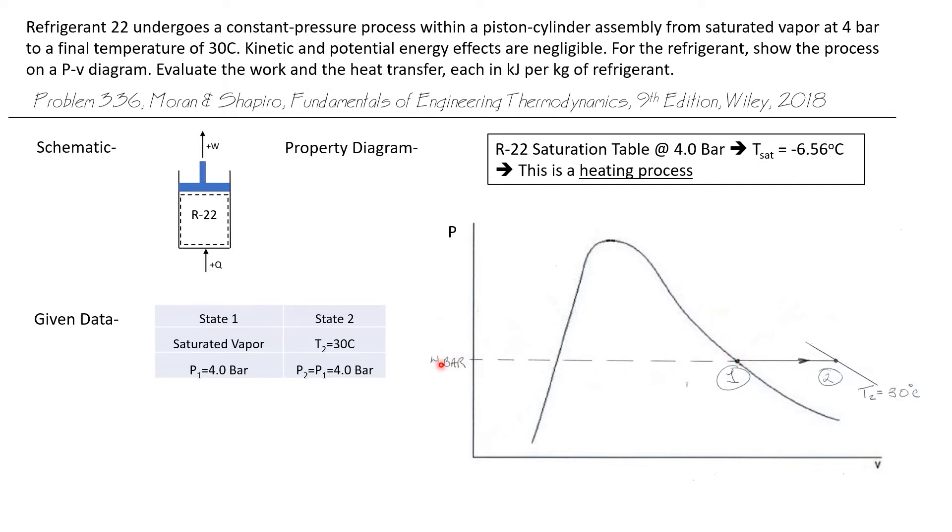On a PV diagram, the constant pressure line of 4 bar is a horizontal line, and where it crosses the saturated vapor line, this is where state 1 exists.